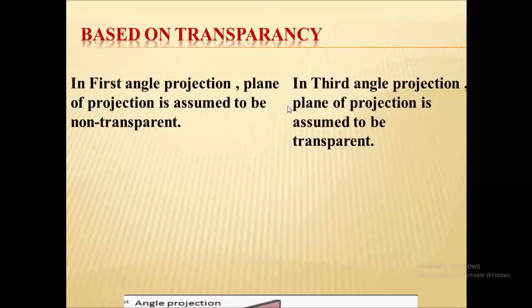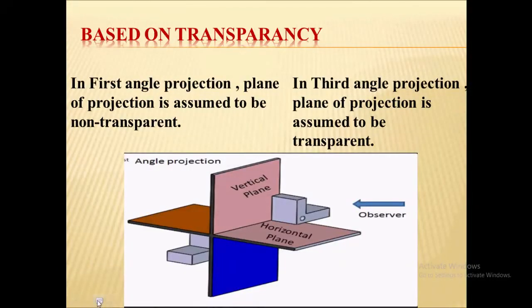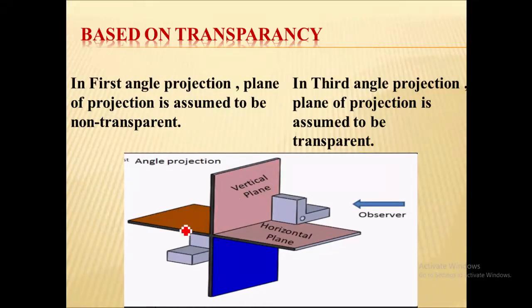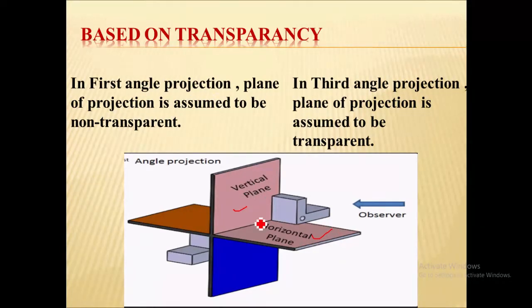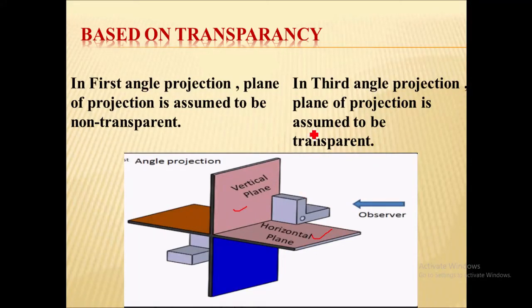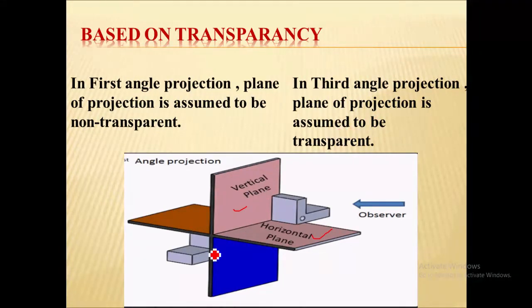Next, based on transparency. The planes of projection are the vertical plane and horizontal plane. In case of first angle projection, these planes of projection are assumed to be non-transparent — they are assumed to be solid. While in case of third angle projection, the plane of projection is assumed to be transparent, meaning we can view from any side.